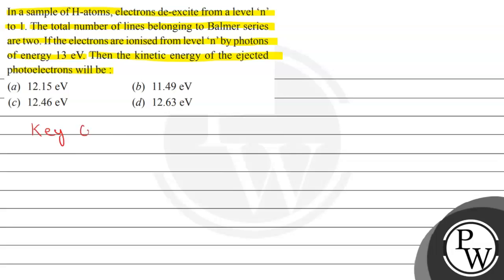If the electrons are ionized from N by photons of energy 13 electron volts, then the kinetic energy of the ejected photoelectrons will be... and these are the following options given to us.